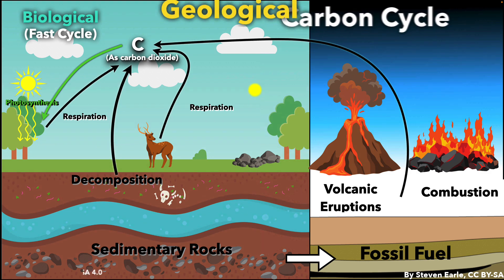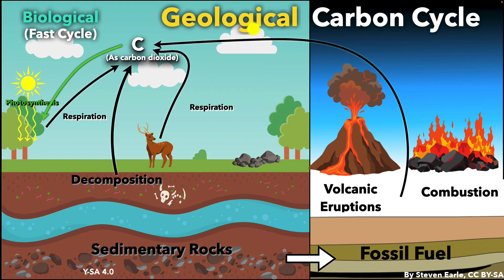This long-term movement of carbon through rocks and deep underground is called the geological carbon cycle. And since this takes millions of years to complete, it's also called the slow cycle.